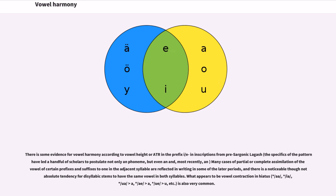There is some evidence for vowel harmony according to vowel height or ATR in the prefix in inscriptions from pre-Sargonic Lagash. Many cases of partial or complete assimilation of the vowel of certain prefixes and suffixes to one in the adjacent syllable are reflected in writing in some of the later periods, and there is a noticeable though not absolute tendency for disyllabic stems to have the same vowel in both syllables. What appears to be vowel contraction and hiatus is also very common.